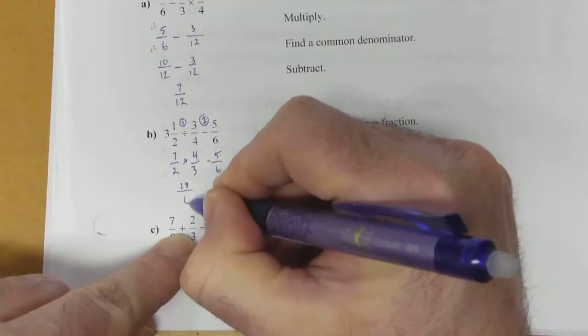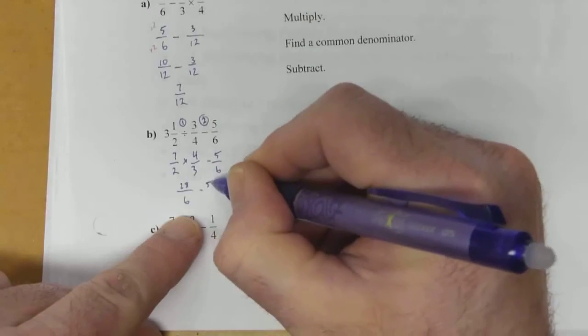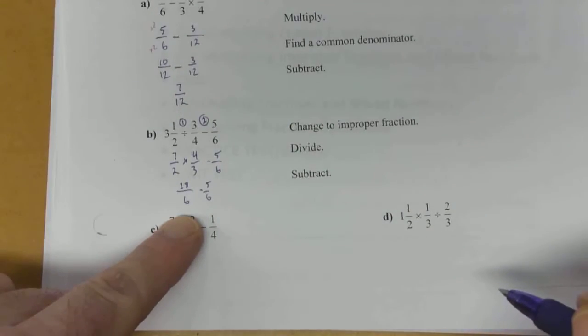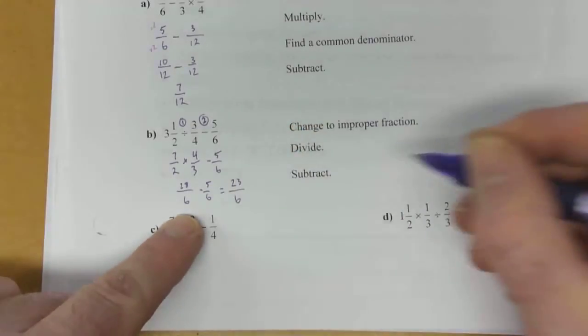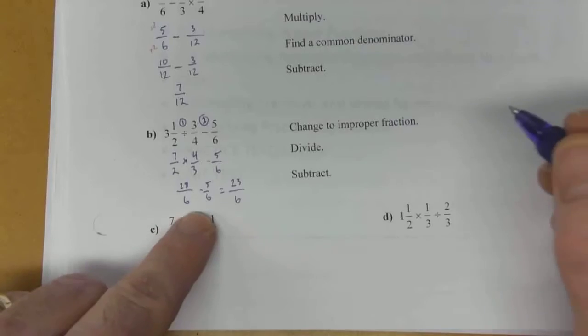So we've got 28 over 6 minus 5 over 6. That becomes 23 over 6. We've got a common denominator already. That worked out nicely.